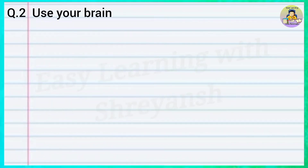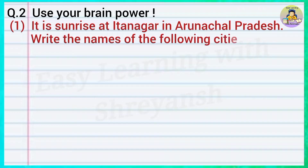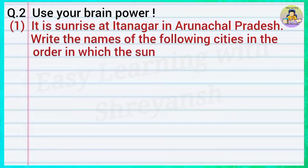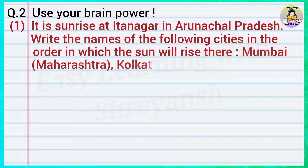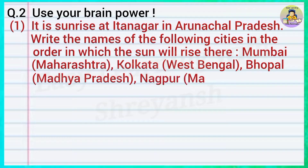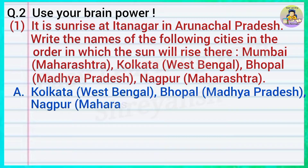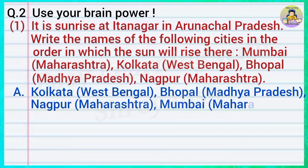Question number two, use your brain power: It is sunrise at Itanagar in Arunachal Pradesh. Write the names of the following cities in the order in which the Sun will rise there — Mumbai Maharashtra, Kolkata West Bengal, Bhopal Madhya Pradesh, Nagpur Maharashtra. Answer: Kolkata West Bengal, Bhopal Madhya Pradesh, Nagpur Maharashtra, Mumbai Maharashtra.